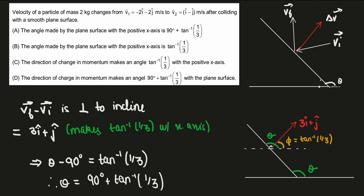We have a particle of mass 2 kg with a given initial velocity and final velocity, colliding with a smooth plane surface. We need to find the angle the plane surface is making and the angle of the change of momentum vector. The key concept being used here is that it is a smooth plane surface.